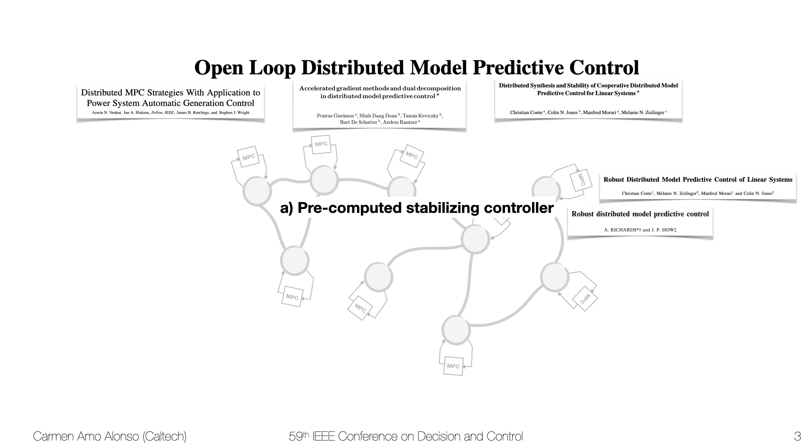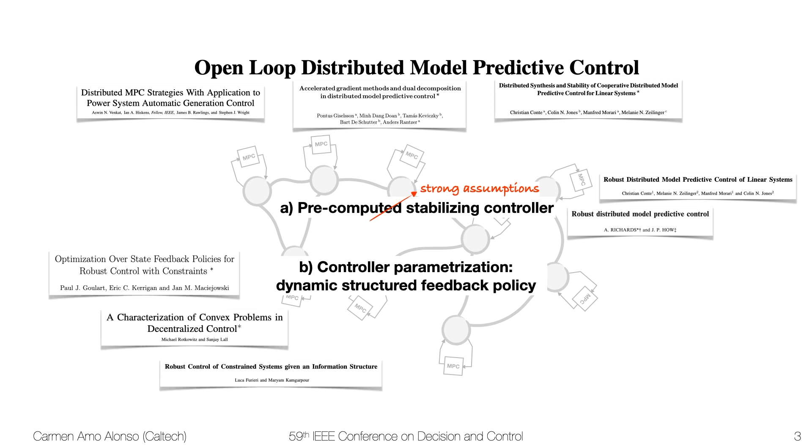To make these approaches robust, people have been following two broad approaches. One is to use a pre-computed stabilizing controller. Although this has been computationally efficient, they unfortunately rely on strong assumptions. The other big approach, and this is where our work fits, is to use a controller parameterization to describe a dynamic structured feedback policy. These approaches have been very successful because they allow computing distributed controllers via convex optimization.